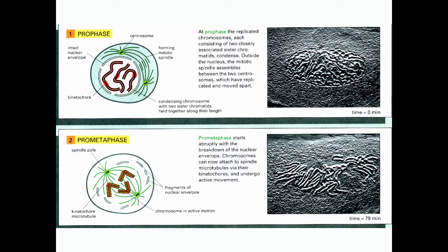At prophase, the replicated chromosomes each consist of two closely associated sister chromatids that condense. This condensation depends on phosphorylation of histone H1 and on phosphorylation of molecules called condensins and cohesins, which you would have talked about in biochemistry.